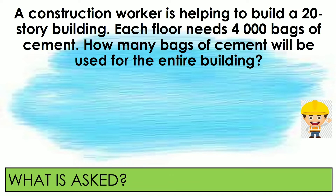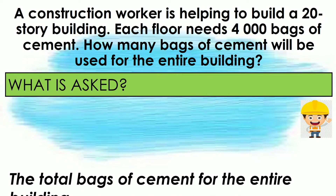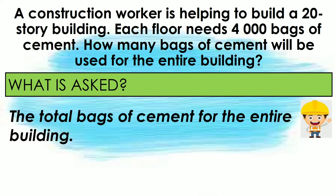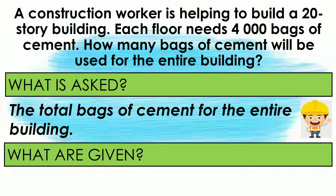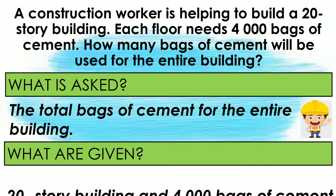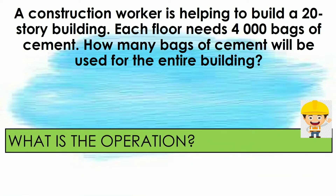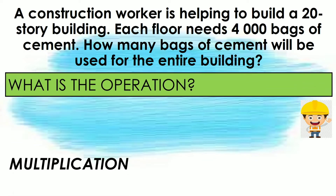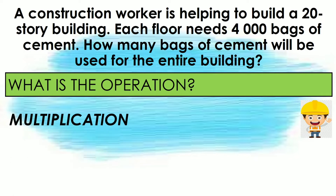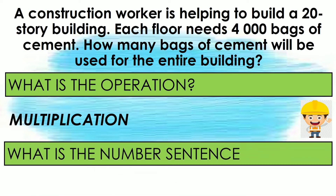First, let us identify what the problem is all about. In this problem, it is asking about the total bags of cement that will be used for the entire building. The given facts are: a 20-story building and 4,000 bags for each floor. The operation we are going to use is multiplication. So the number sentence for this problem is 4,000 times 20 is equal to N.